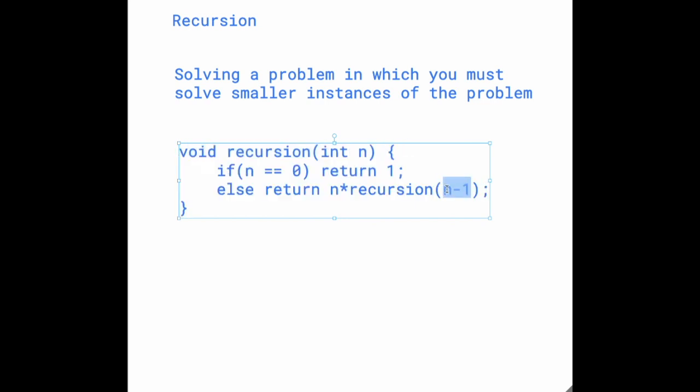So then we're going to have to do... And we're going to basically perform the same thing, but with n minus 1. So n minus 1 would be 4, and it's not equal to 0, so it goes here again. And then we're returning n times recursion of n minus 1 again. So we're calling the recursion function in itself again.